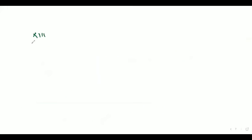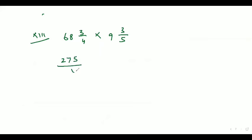Now let's move to the thirteenth part. The thirteenth part is 68 whole 3/4 into 9 whole 3/5. So 68 whole 3/4 can be written as 275/4 and 9 whole 3/5 can be written as 48/5. After cancellation, the answer comes out as 660.